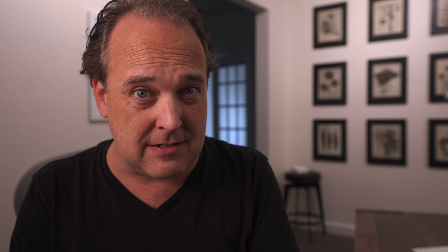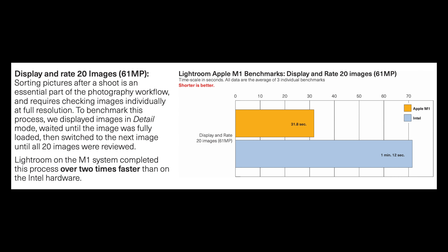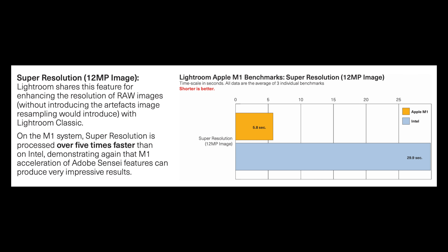What does that mean to you? It means speed. Adobe did benchmark testing through a third party and discovered that basic operations like importing, exporting images, and cruising around in loop view give you about a 40% increase in speed. Screen rendering of 61 megapixel images showed a performance increase of over two times faster, and performing Super Resolution operations yielded performance times of over five times faster.